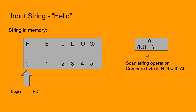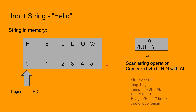The scan string instruction compares the byte pointed to by the RDI register with the byte in the AL register, and it sets the status flags accordingly. In this case we want the scan string to continue across the length of the string, so we will use the scan string instruction with a REP prefix — specifically the REPNE (repeat not equal) prefix. This will cause the scan string to iterate in a loop until the zero flag is set to 1.